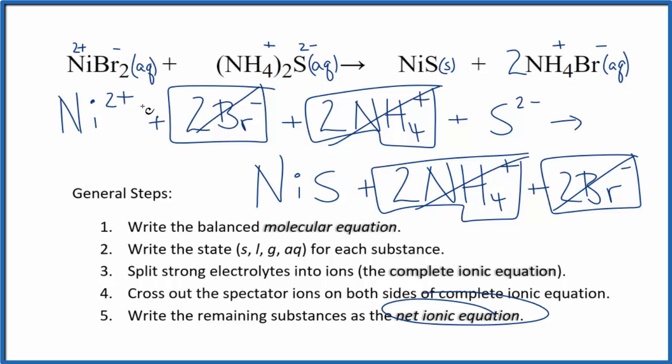What's left, that's the net ionic equation for nickel-2-bromide plus ammonium sulfide. I'll clean it up, write the states, and we'll have our net ionic equation.